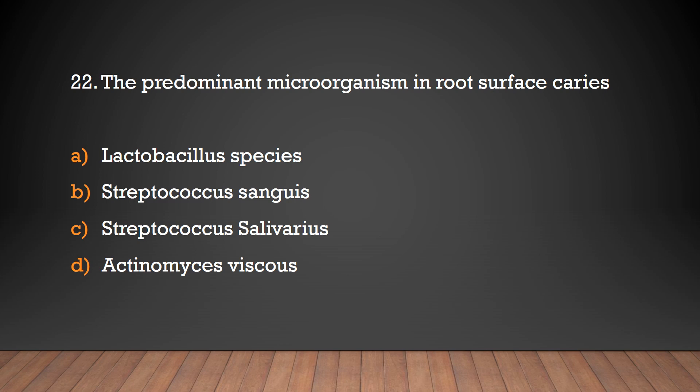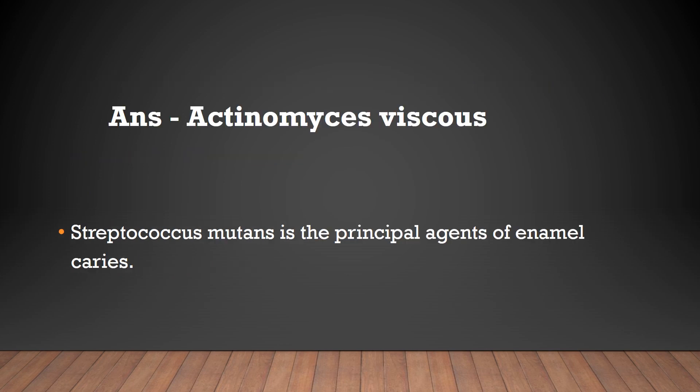The options are: Streptococcus anguis, Streptococcus salivarius, or Actinomyces viscosus. The answer is Actinomyces viscosus. Note that Streptococcus mutans is the principal agent of enamel caries.